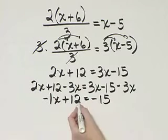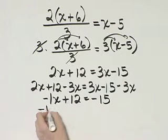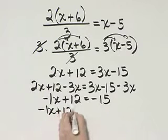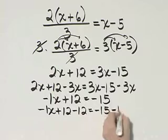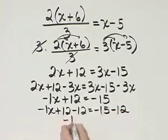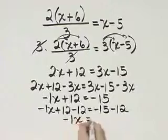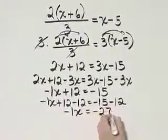Now I will subtract 12 from both sides. So here's my left side. I'll subtract 12. Here's my right side. I'll subtract 12. The left side, I have negative 1x, or negative x. Negative 15 minus 12, that's negative 27.